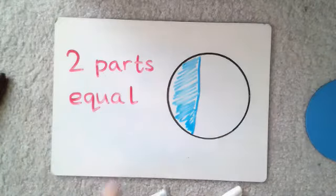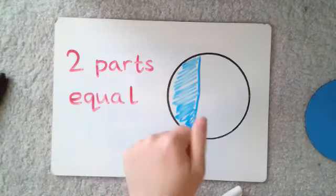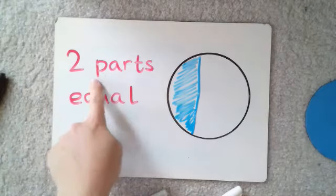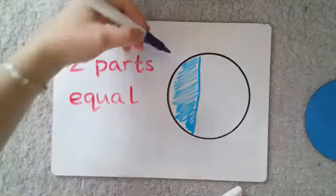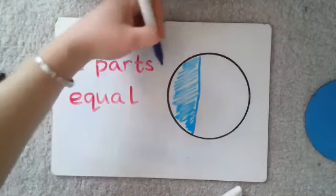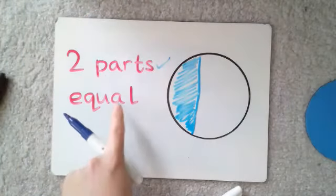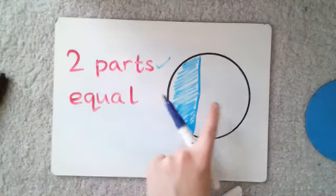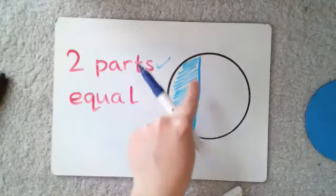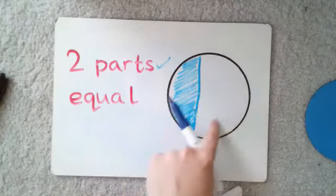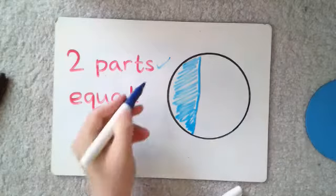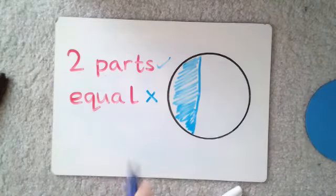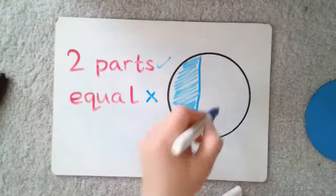All right, let's have a look at my circle now. Have I split it into two parts? Yes I have - one, two. Have I split it into two equal parts? Is this part here that I colored in the same size as this part here? No it's not. So have I split that circle in half? No, I haven't.